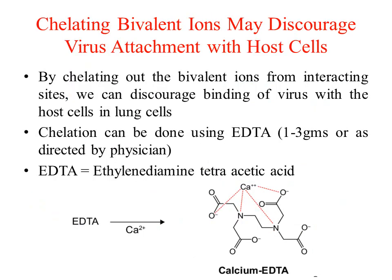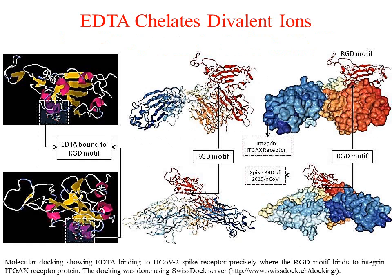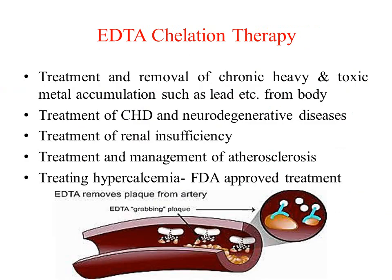So, if we can somehow remove these divalent ions from lung cells, we can prevent binding of the virus with host cells dramatically. This can be done using ADTA, which is a well-known chelating agent. There is a therapy called ADTA chelation therapy which has previously been used for the removal of toxic metals from the body for the treatment of coronary heart diseases and neurodegenerative diseases.